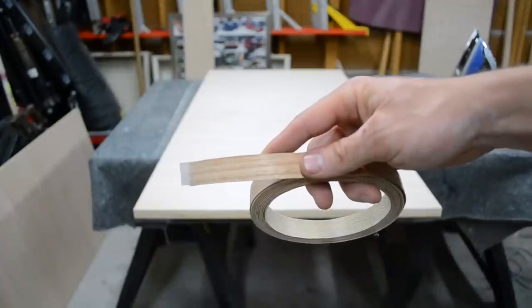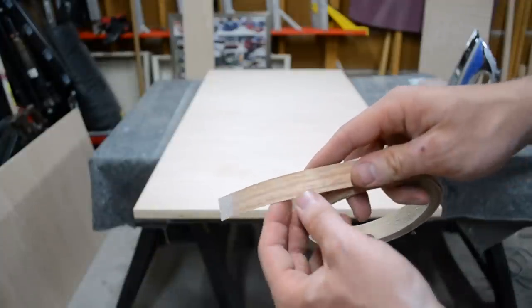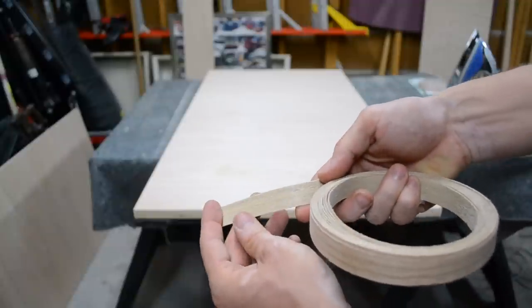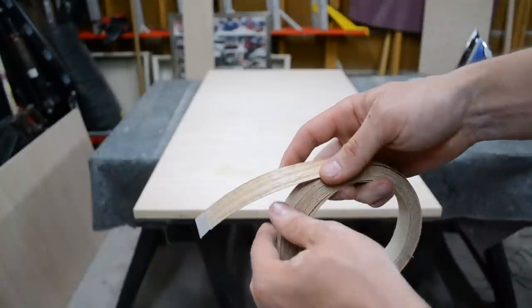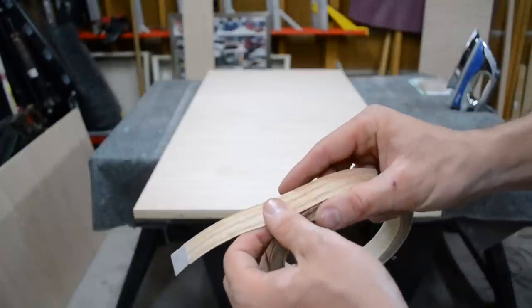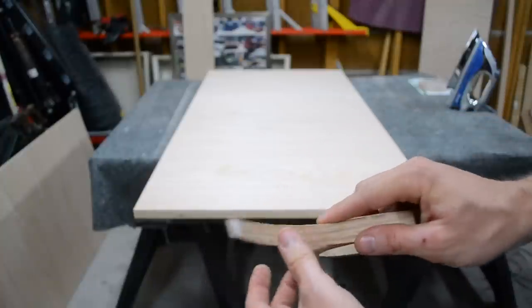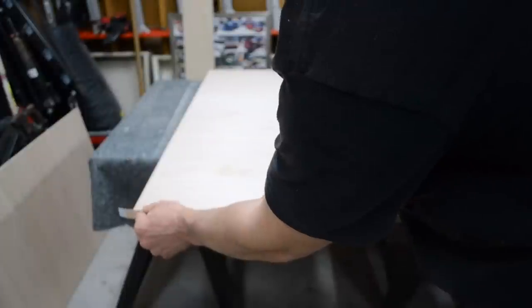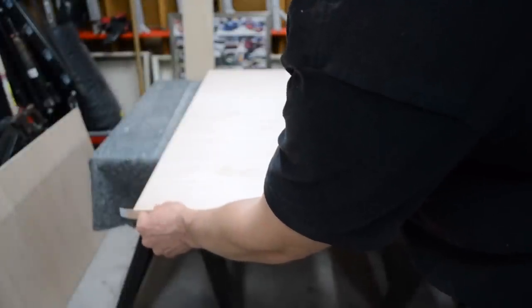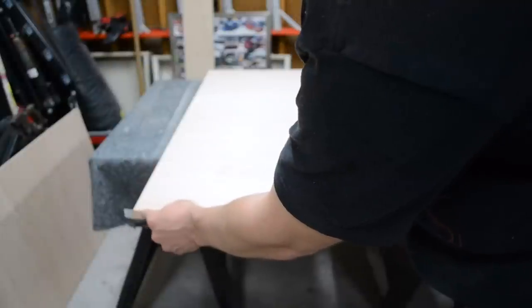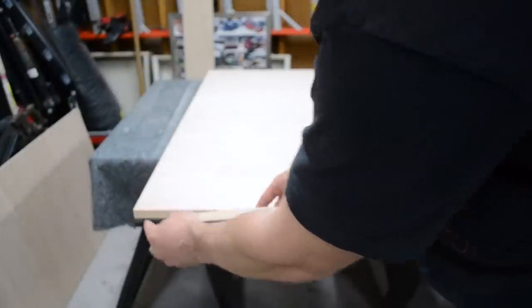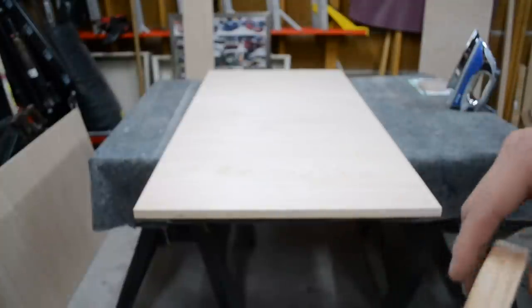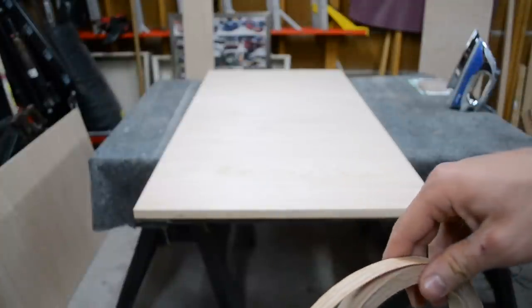In case you don't know what oak veneer is, it's a real thin piece of oak with an adhesive on the back. You use an iron and place this on the edge of the plywood and iron it on. Once it dries, you come back and trim it off with a sharp knife or a veneer trimmer. It's really simple and makes your project look a whole lot nicer.